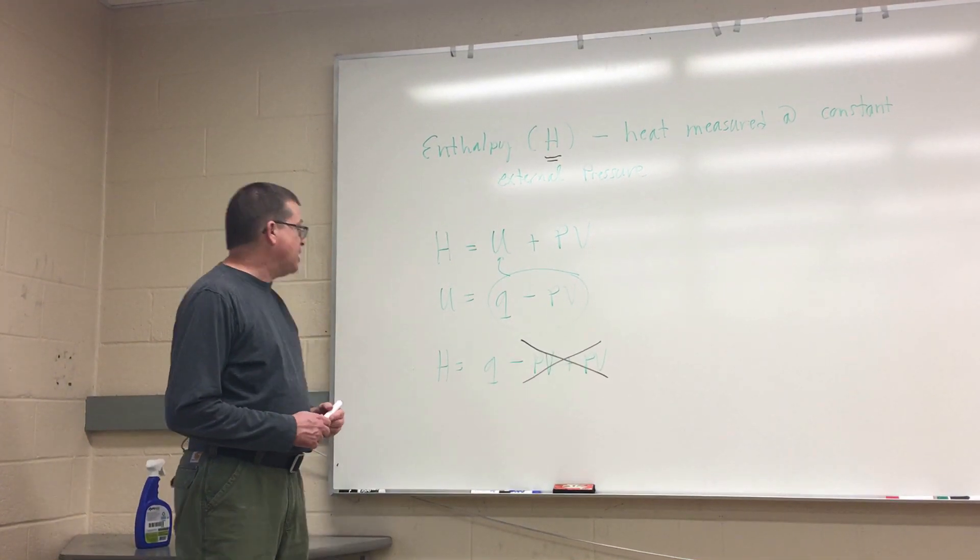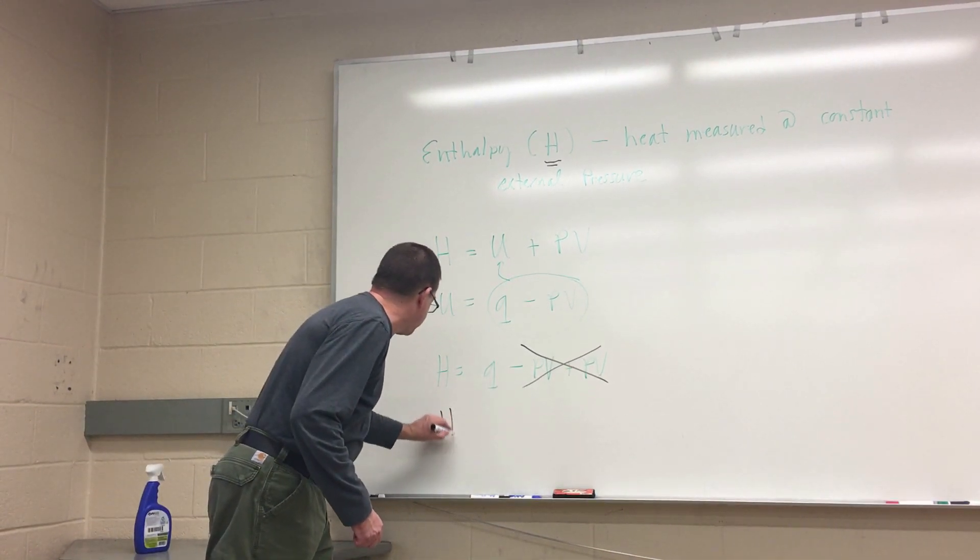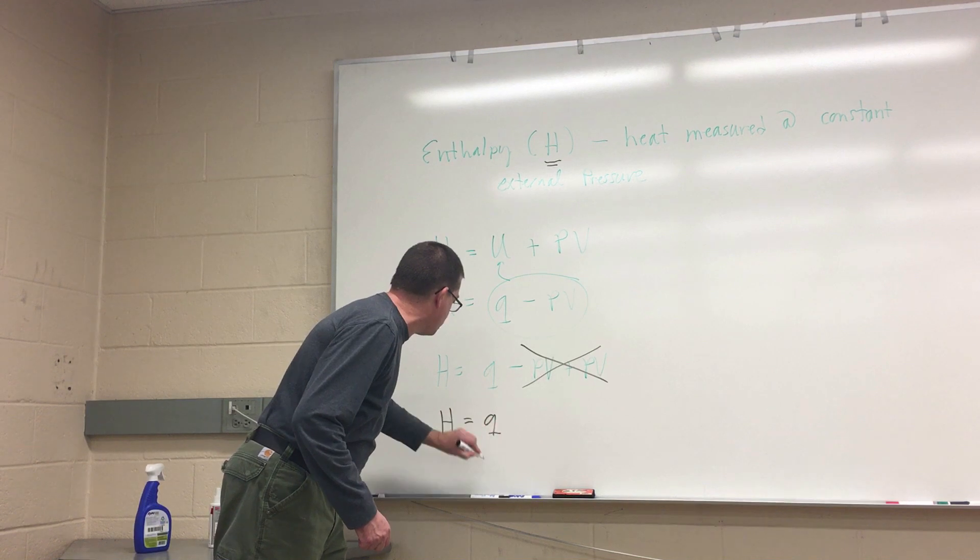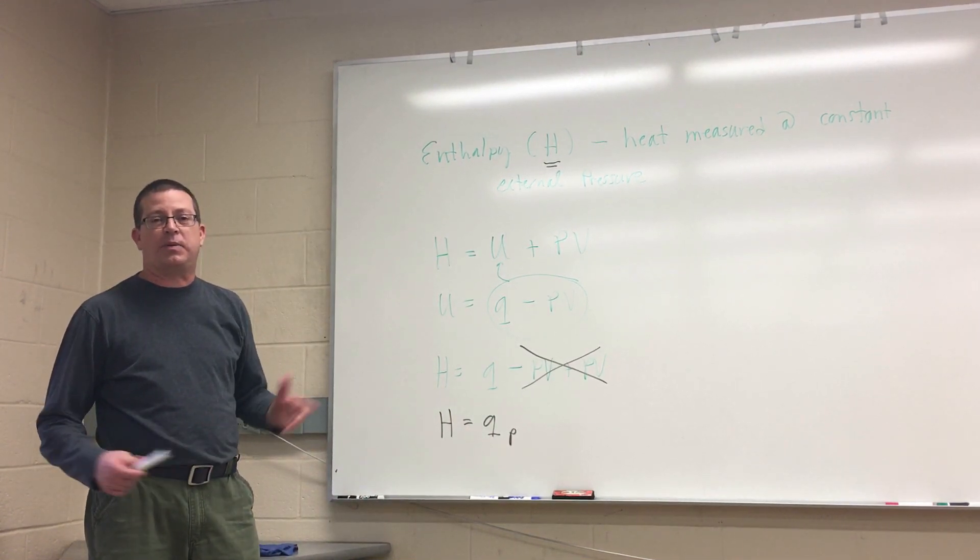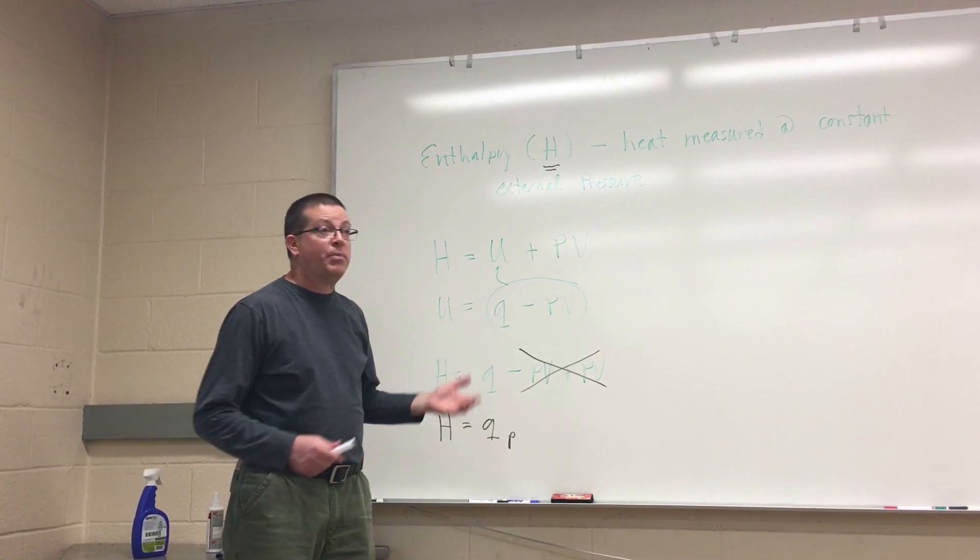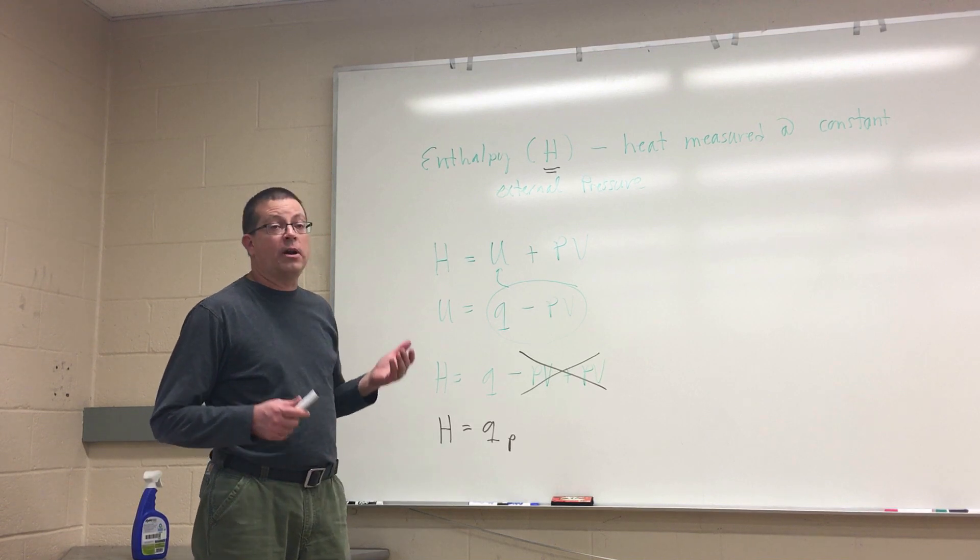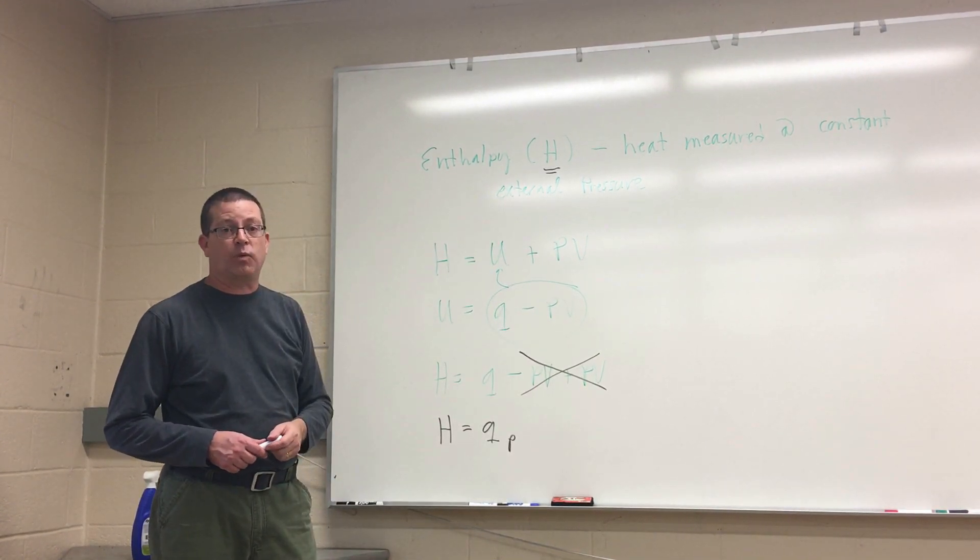So as a result, H is equal to Q measured at constant P. So I can say that H is equal to Q sub P to signify that that's going to be at a constant pressure. Whenever we talk about P times delta V, we assume that the external pressure is going to be constant. So that's the assumption we make here as well.